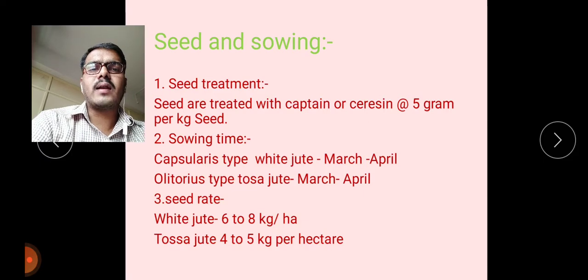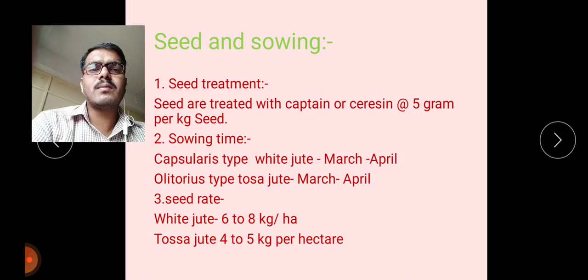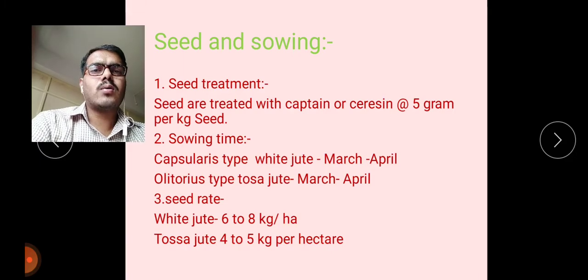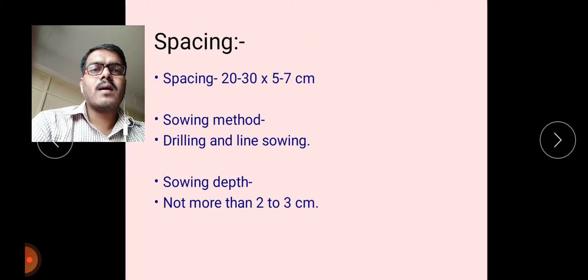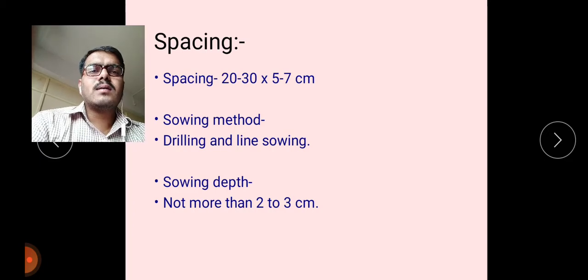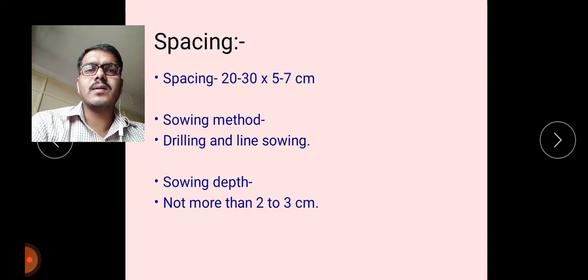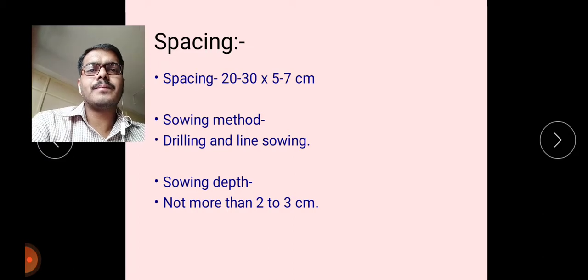White jute requires about 6 to 8 kg — approximately 2 to 3 kg more — as compared to tosa jute. Spacing required is 20 to 30 centimeters between two rows and 5 to 7 centimeters between two plants. This spacing is required for better growth and development of the jute plant.